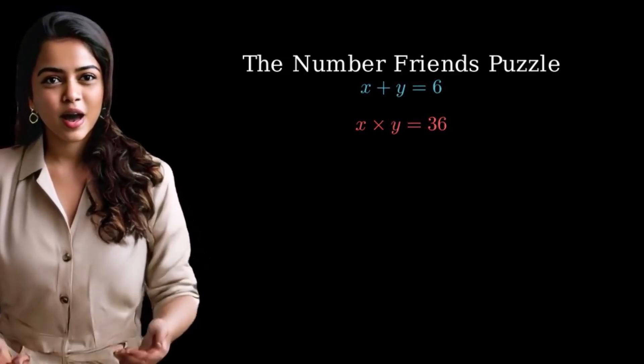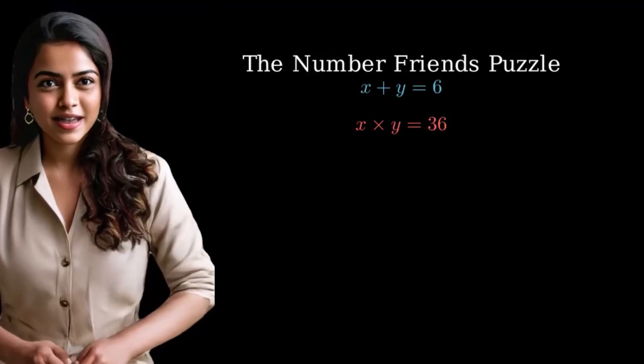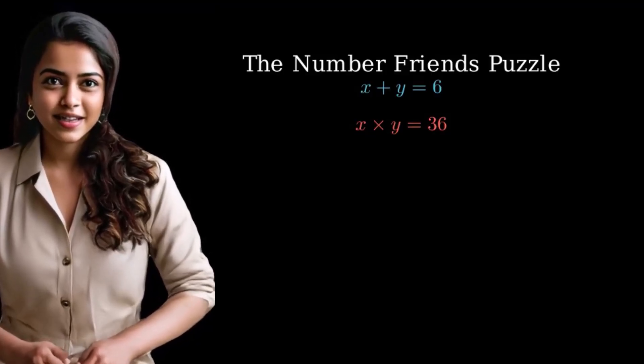And when we multiply them together, we get 36. Let's find what numbers x and y could be.